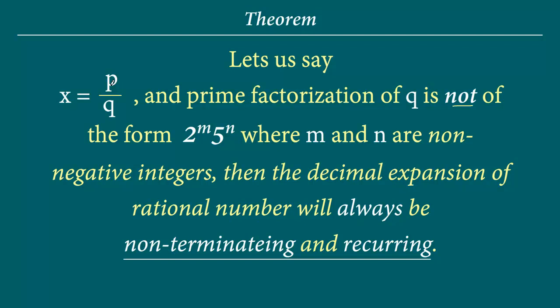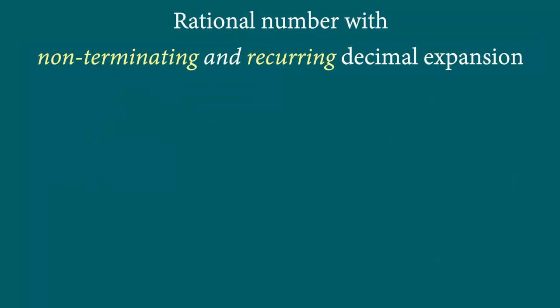Meaning when we actually do the division we will see it is non-terminating and recurring. Now let's take a look at some examples and see if it is indeed true. So basically we are going to take a number numerator and divide that by denominator. Now we do not want 2 to the power m times 5 to the power n.